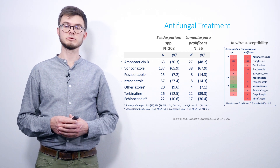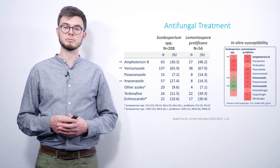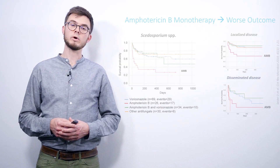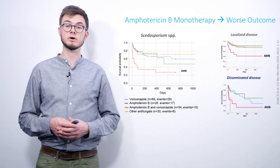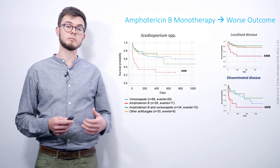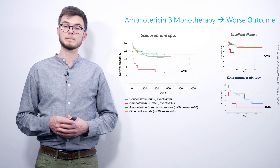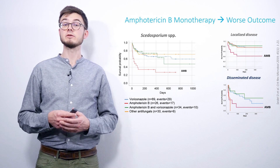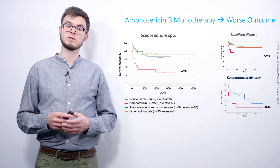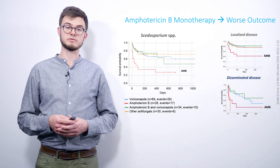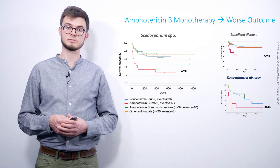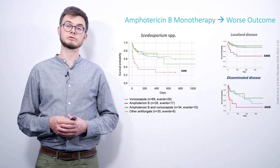Another recent publication, including FungiScope data, was just published by Jeffrey Jenks and colleagues on this combination therapy. One word concerning monotherapy of amphotericin B: it seems to be associated with the worst outcome, as displayed on this slide. It even shows the same trend if voriconazole was included as a combination agent. This effect was seen independently of infection site — so localized or disseminated infections — and also independently of surgical treatment.